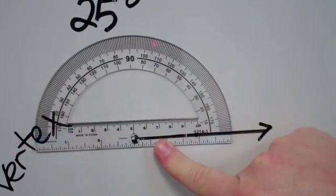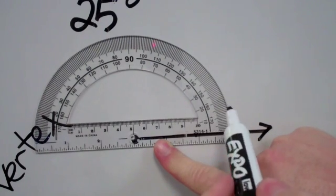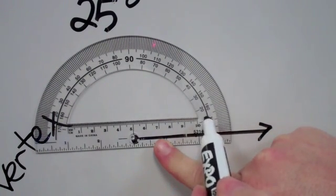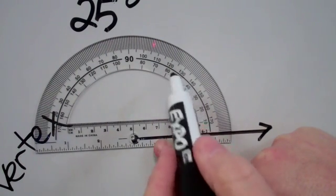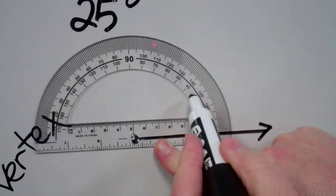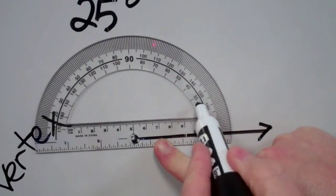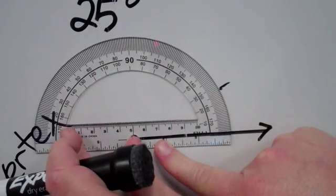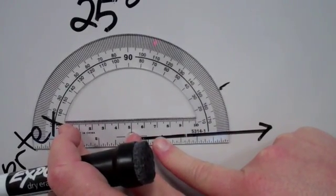Now I'm going to go over to 25 degrees. Each of these lines counts as 10. I can see my protractor says 10, 20, 30, 40, 50. So I'm going to go 10, 20, and here's 30, so 25 is going to be smack dab in between. I'll put a little dot right at 25.